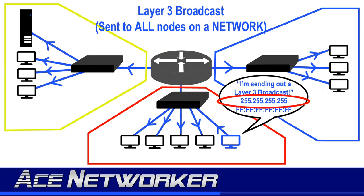Technically, if you didn't have a subnet mask, the broadcast address would be 255.255.255.255, or all 1s. If you do have subnets, 255.255.255.255 becomes the broadcast for all networks and all hosts — not just a single subnet, since each subnet has its own broadcast address.